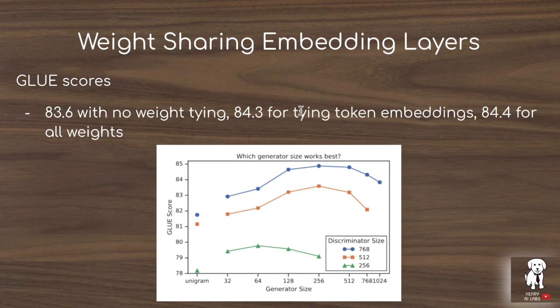If the generator is a lower capacity model than the discriminator, they add a linear projection from the discriminator embedding down into the generator. For example, if the discriminator embedding is 768-dimensional and the generator is 512 or 256, a linear layer projects the shared 768-dimensional embedding down into the generator. By tying these token embedding weights, both the generator and discriminator can learn from both tasks — an interesting approach not typically done in the GAN framework.